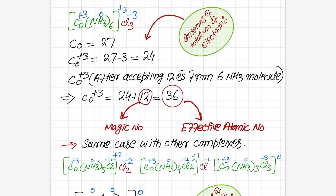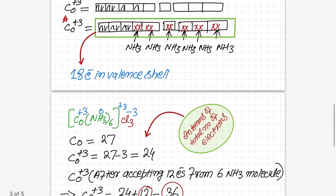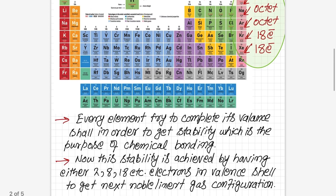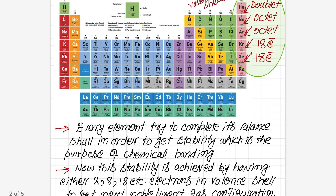In this way, every element satisfies both its primary and secondary valency in order to gain stability and attain the noble gas inert configuration. Cobalt in +3 form first goes to its primary valency (oxidation state), then attaches to 6 ammonia molecules (secondary valency), and after satisfying both, it attains 36 electrons — the Effective Atomic Number.